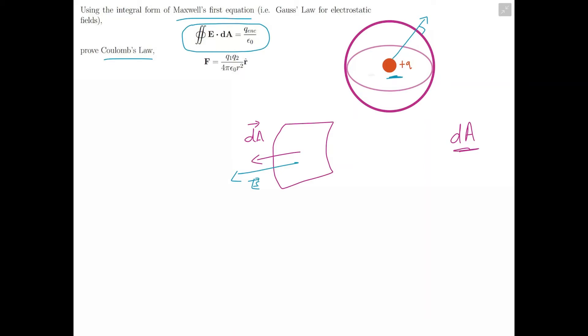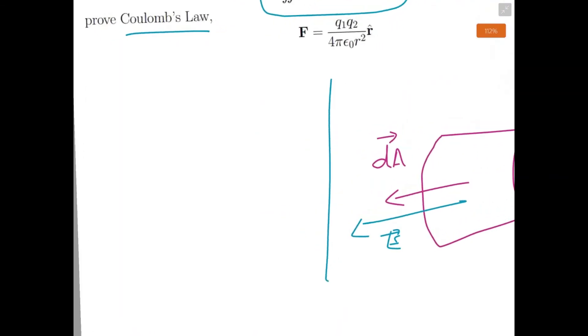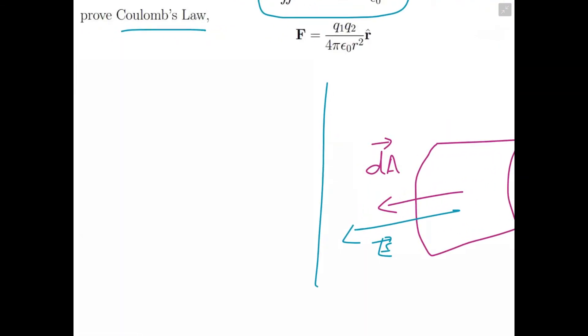The only reason E is parallel to dA is because we chose a spherical surface and the electric field is spherically symmetric. So that double integral actually simplifies a bit. We're doing the dot product of E and dA—well, because they're parallel, the dot product is just equal to the product of their magnitudes.